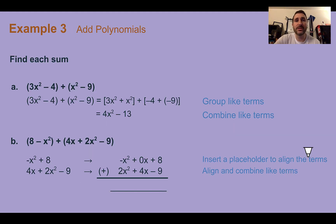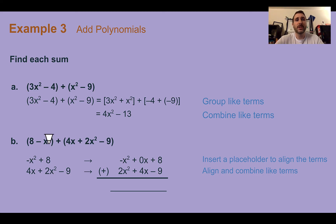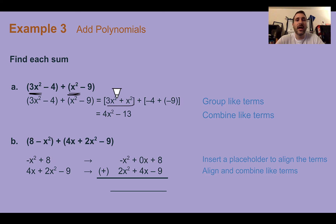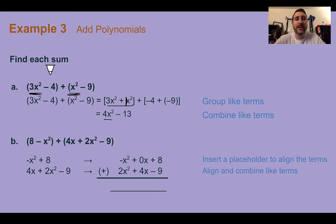Example 3, add polynomials. Find each sum. In part A, using the horizontal method, we group like terms together. We have 3x squared and x squared grouped together — that's 4x squared total. We have no single x terms, so we move on to the constants: negative 4 and negative 9 combine to give negative 13. So the answer is 4x squared minus 13.